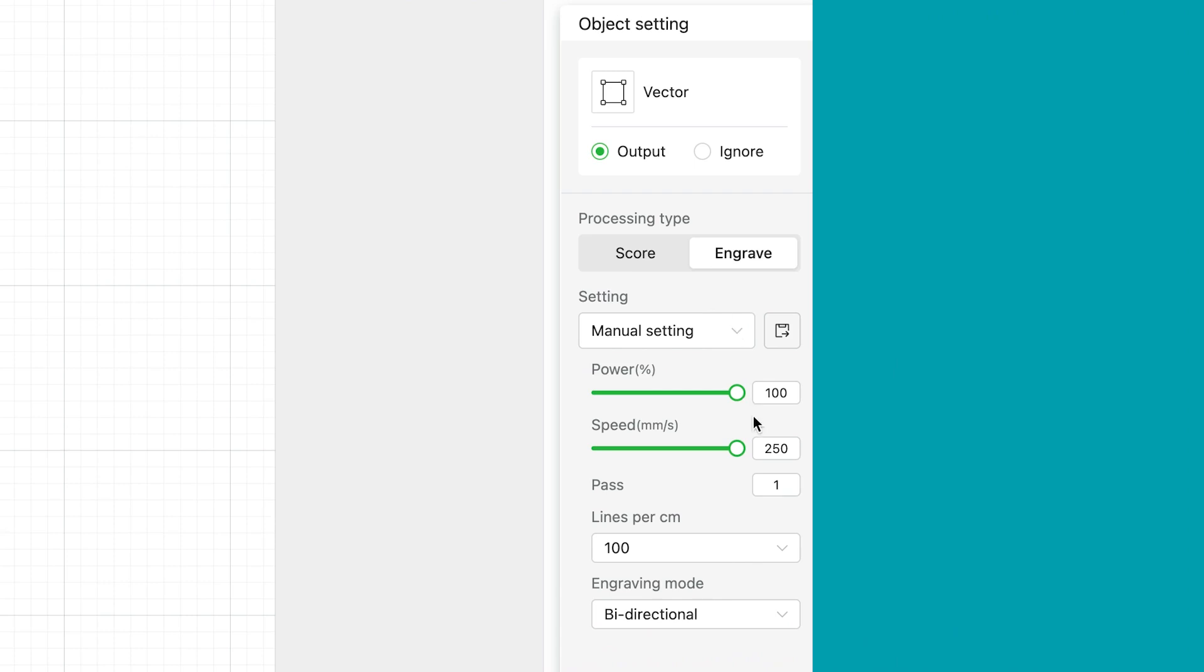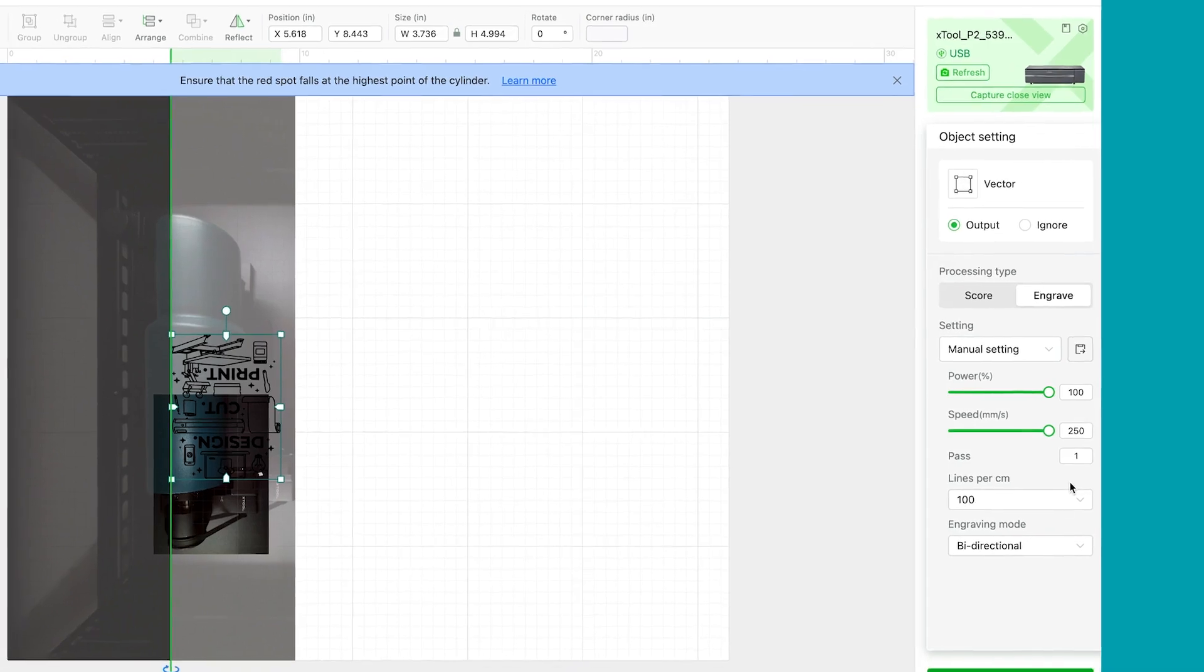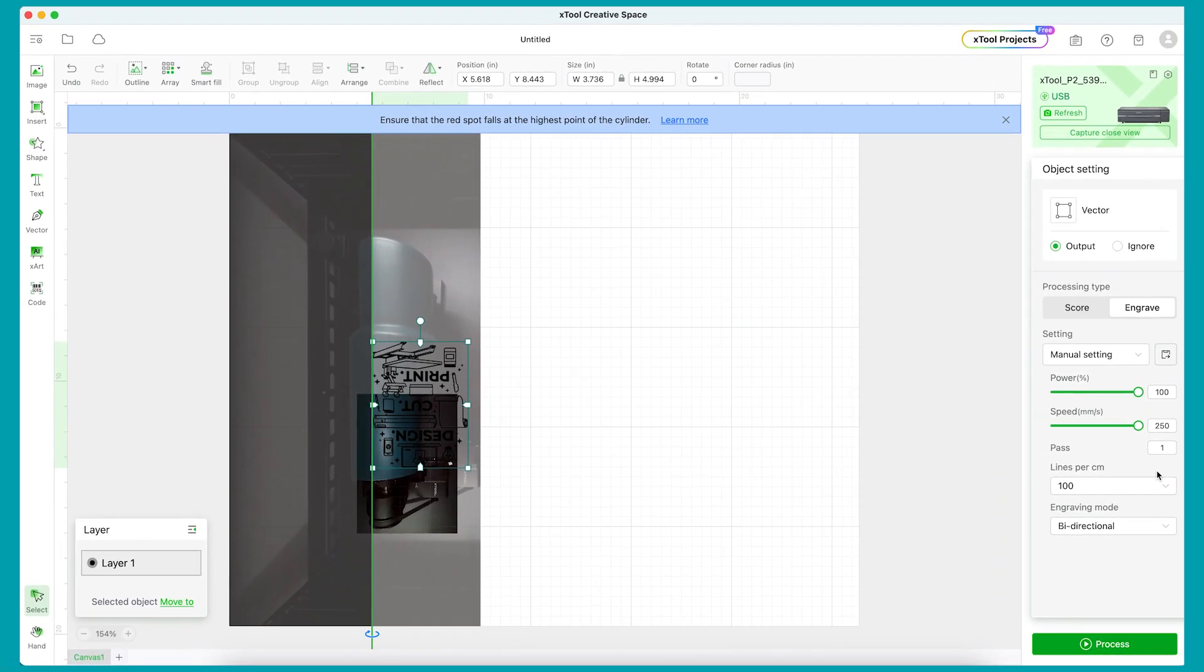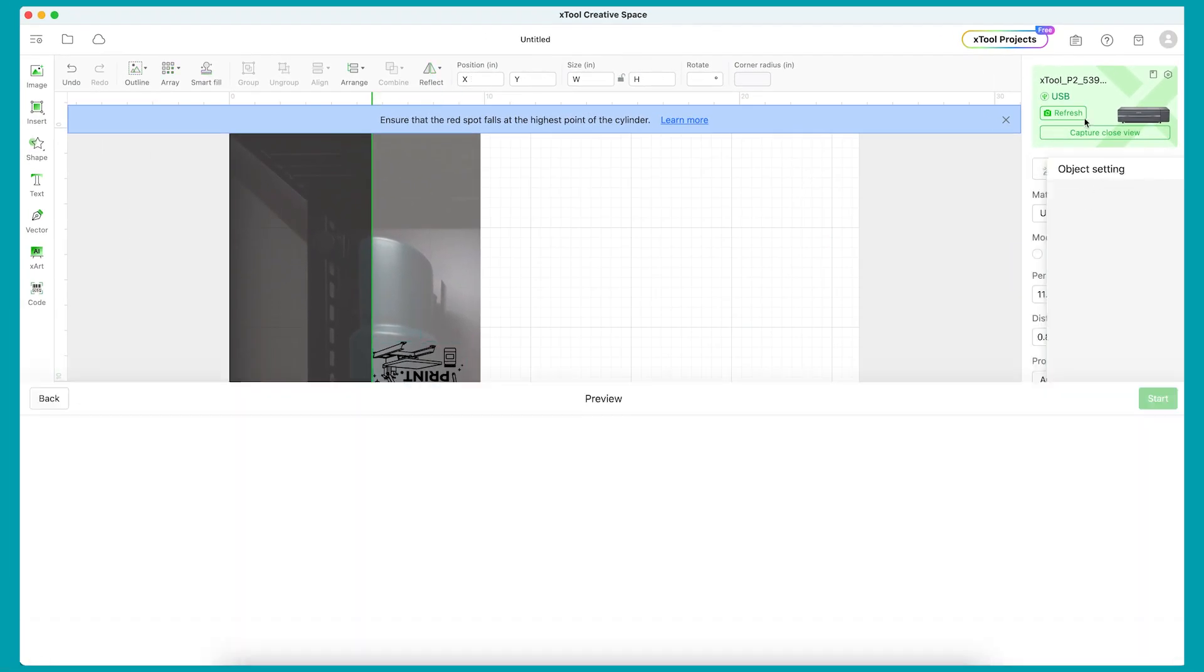With the design selected, now let's take a look at the engraved settings. For coated tumblers, the settings I found that work best for me are a power of 100%, speed of 250, with one pass, and 100 lines per centimeter. Now we're ready to click the process button.